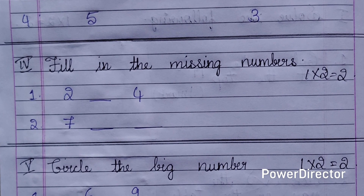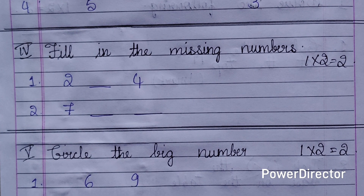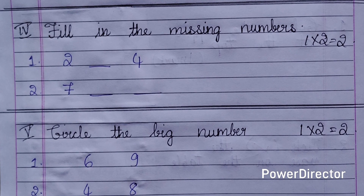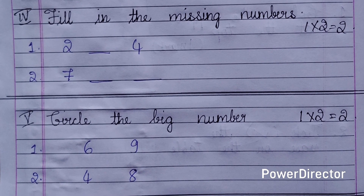Fourth main: fill in the missing numbers. Two questions are there, each carries one mark, two marks for this main. The sequences given are: two, dash, four and seven, dash, dash.